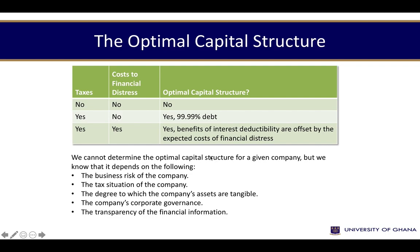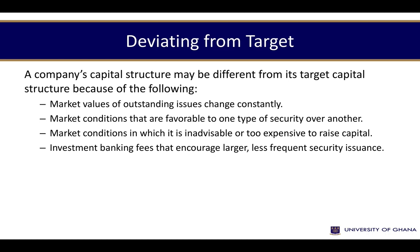Sometimes a company's capital structure may differ from its target capital structure because: market values of outstanding issues change constantly, market conditions may favor one type of security over another, market conditions may make it inadvisable or too expensive to raise capital, and investment banking fees encourage larger, less frequent security issuance.